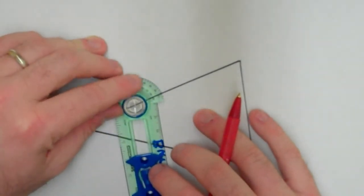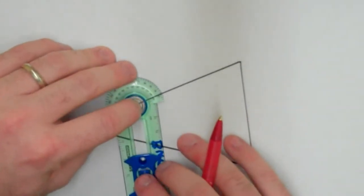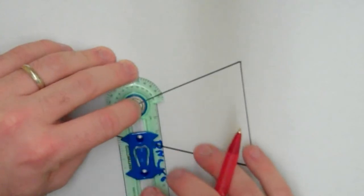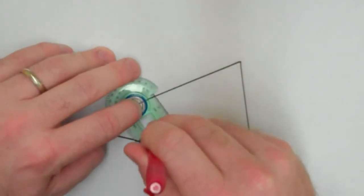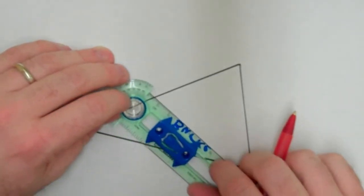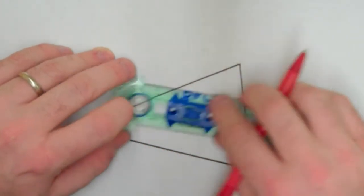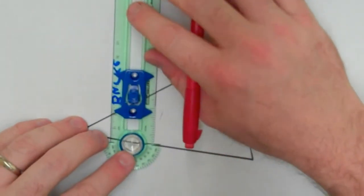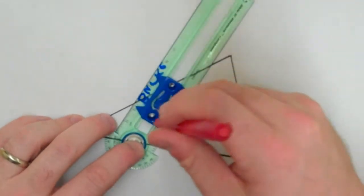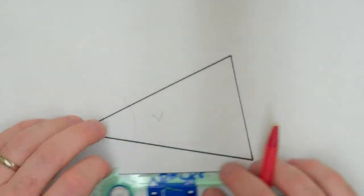So I'm going to put the point of my compass right on that intersection, open it up more than halfway, make a mark on the outside. That's not a very good mark. There we go. Make another one, the exact same distance on the other side. There we go.